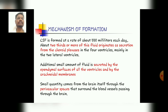Additionally, a small amount of the fluid is secreted by the ependymal surfaces of all the ventricles and by the arachnoid membranes. A small quantity also comes from the brain itself through the perivascular spaces which surround the blood vessels passing through the brain.